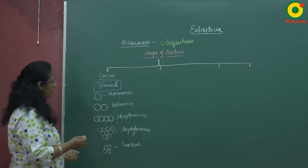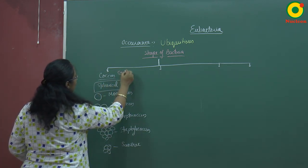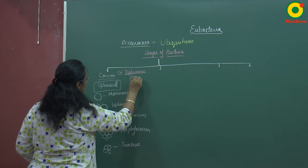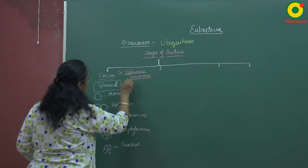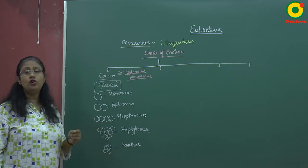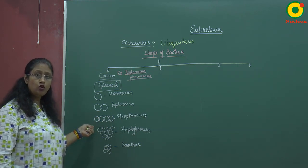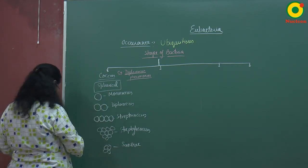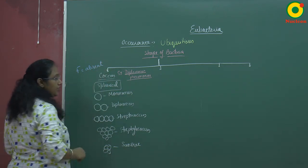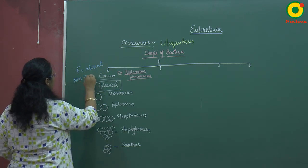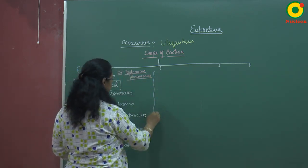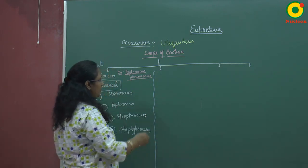An example of coccus bacteria is Diplococcus pneumoniae. In these bacteria, flagella are always absent, so such bacteria are always non-motile. Due to the absence of flagella, they are non-motile bacteria.